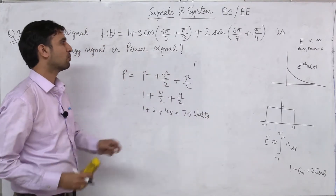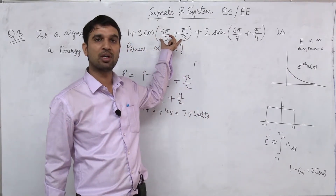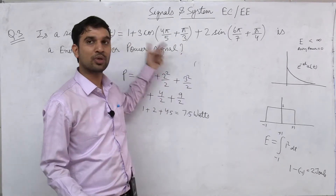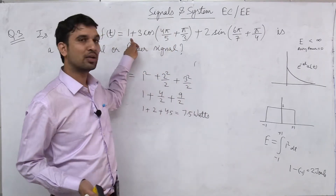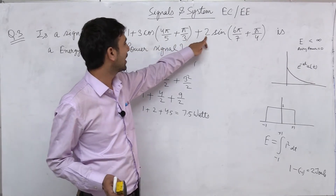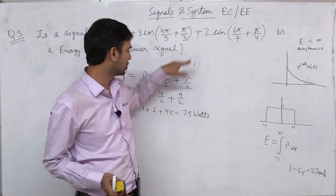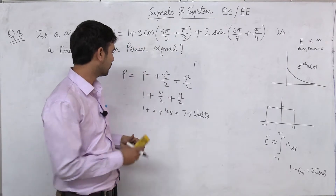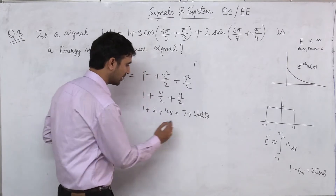Always remember, our power depends only on the amplitudes — it does not depend on any argument. Power will never depend on the argument, it depends only and only on the amplitude. So 1 squared — what have we done? We have basically calculated the mean square value of the signal. The mean square value is found by squaring the amplitude and dividing. 1 is the DC value, so no division needed. 2 is attached with the periodic signal, so its RMS value is 2 squared by 2. And 3 squared by 2. That means 1 + 4/2 + 9/2 = 1 + 2 + 4.5 = 7.5 watts. So we have found the power.